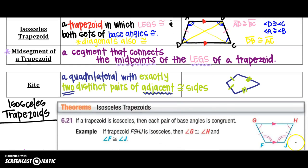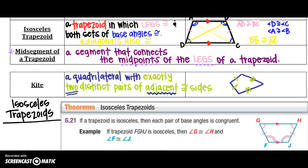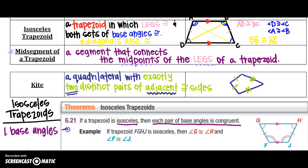Let's get into some theorems. The first one is about isosceles trapezoids: if a trapezoid is isosceles, then each pair of base angles is congruent. So the base angles lying on the same base are congruent. Looking at the picture, I know the bases are the ones with the arrows — the parallel sides. The base angles on base GH are angle G and angle H, so those are congruent. Then on the other base FJ, angle F is congruent to angle J. We have to be particular about which base we are looking at.